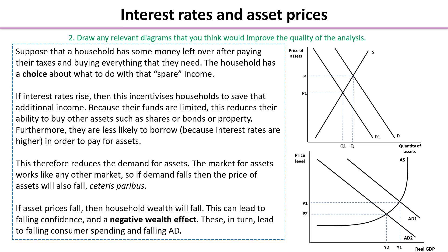In the final paragraph, we refer to the macroeconomic situation — falling confidence and a negative wealth effect. This in turn leads to falling consumer spending and falling aggregate demand. Here we have our macro diagram with price level and real national output on the axes. Aggregate demand shifts left from AD1 to AD2, which reduces inflationary pressure from P1 to P2 and reduces real national output from Y1 to Y2.